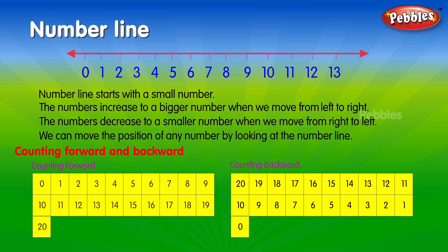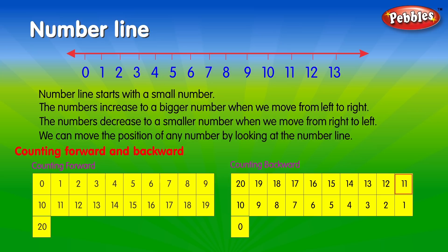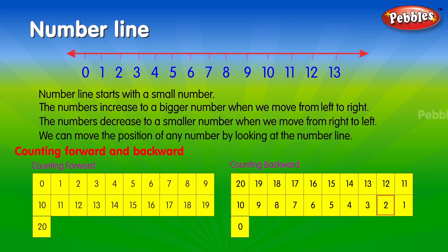Counting backward. 20, 19, 18, 17, 16, 15, 14, 13, 12, 11, 10, 9, 8, 7, 6, 5, 4, 3, 2, 1, 0.